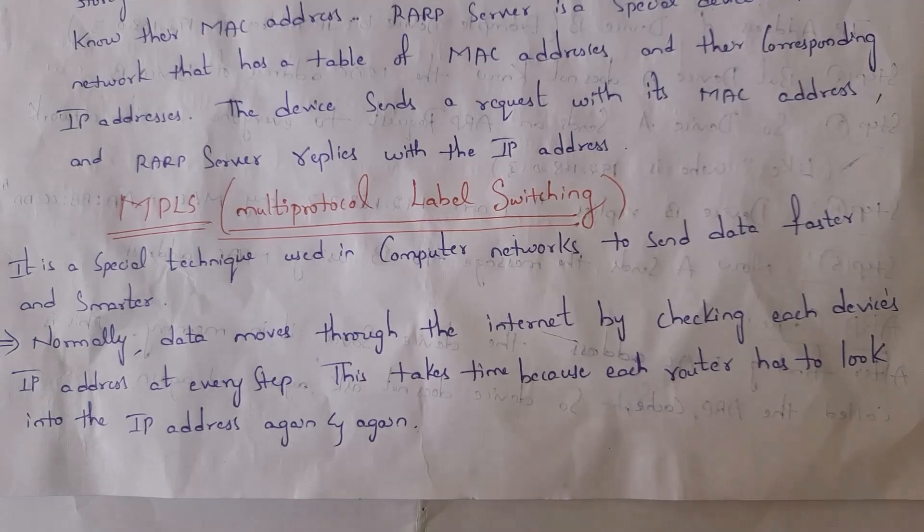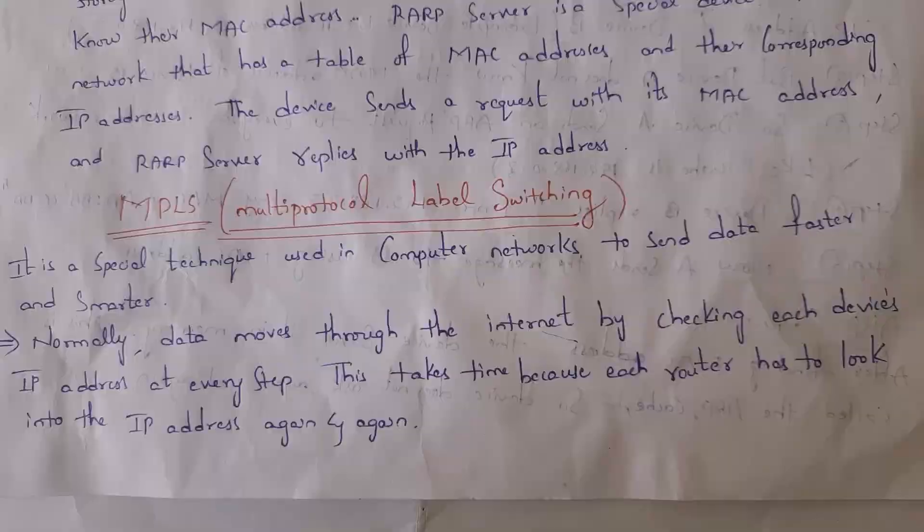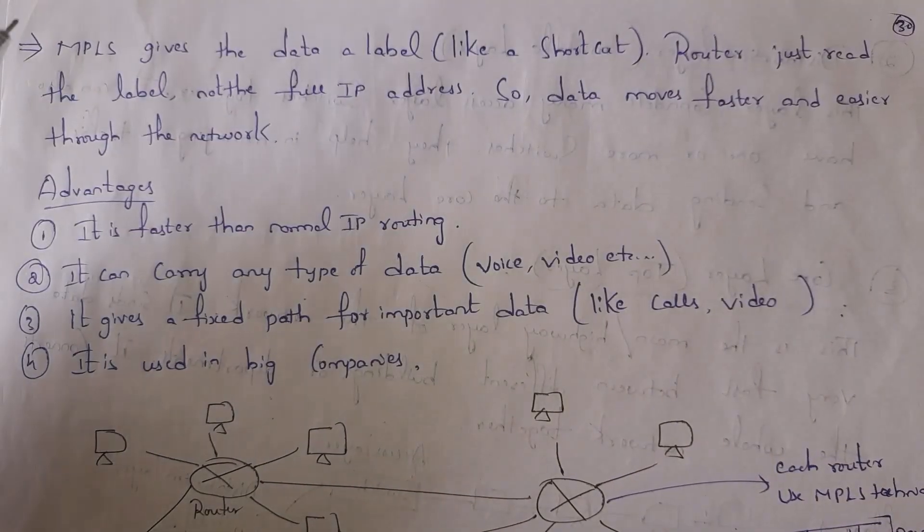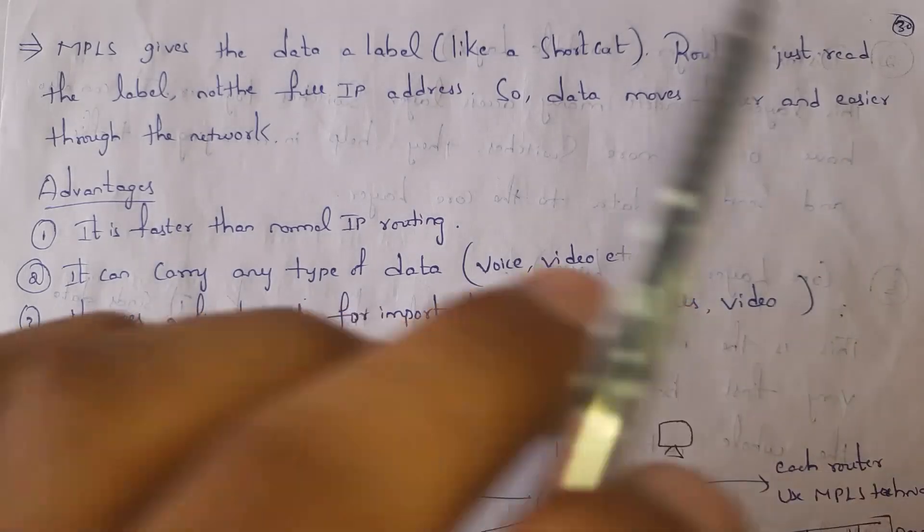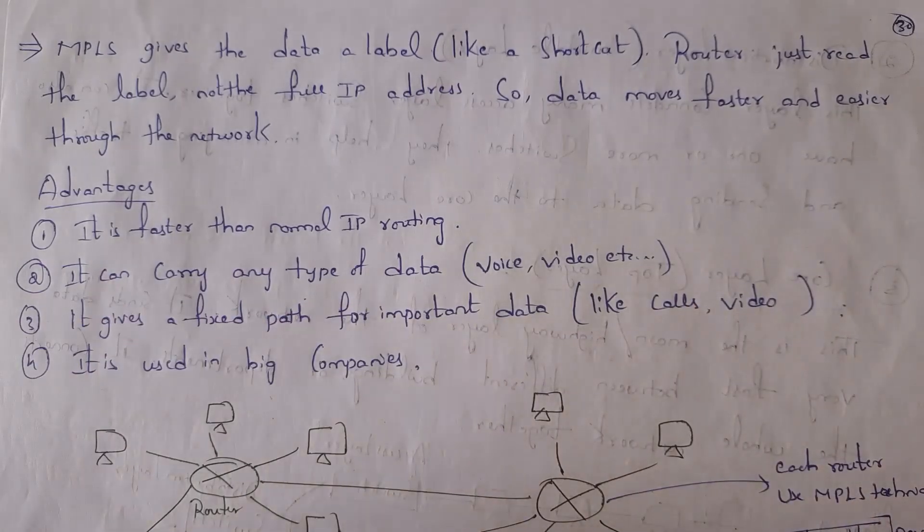This takes time because each router needs to verify IP address again and again. So MPLS will give data a label. Label is nothing but it is like a shortcut - router just reads the label, not the full IP address, so data will move faster and easier through a network.